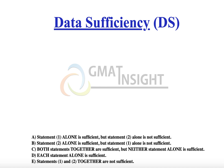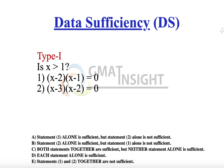We can make the most sense out of these options only if we have a few questions. Data sufficiency questions always come with two statements. Here is one example of a data sufficiency question we should take as reference. The question is: is x greater than 1? We have two statements. Understand the basic thing first — the statements are always pieces of facts meant to help us answer the question.